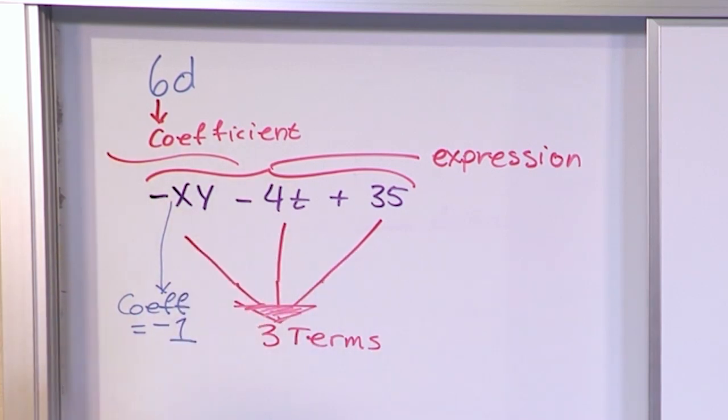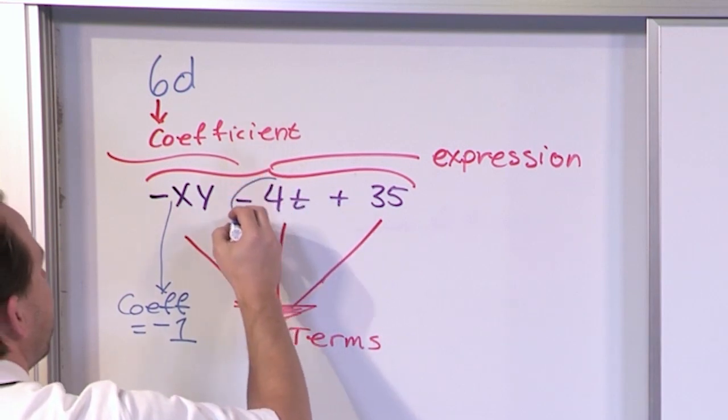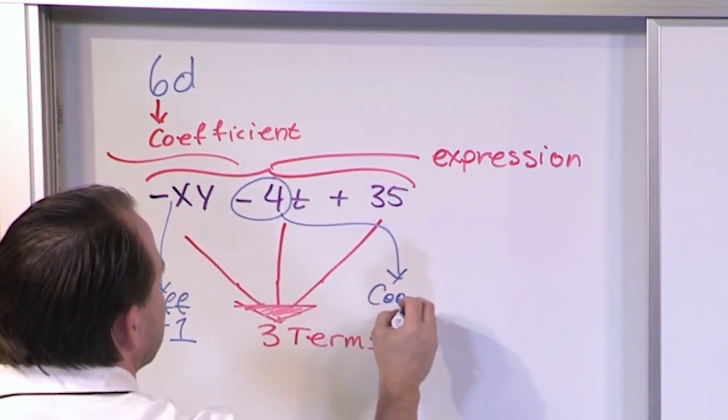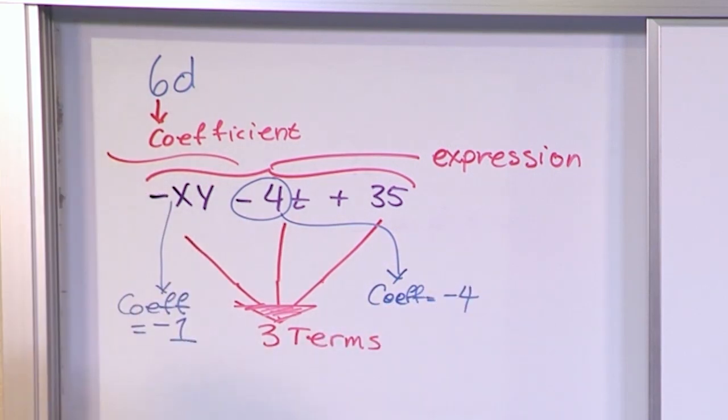What is the coefficient of the middle term? Well, if you look at this, this is the middle term. The coefficient there is negative four, because that's the number sitting out in front.